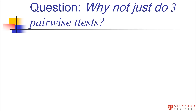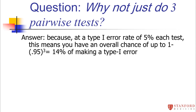You might ask: why wouldn't I just run multiple t-tests? I've got three groups — why not run a t-test comparing the placebo to the 800 milligram group, the 800 milligram to the 1500 milligram group, and the 1500 to the placebo? Why do an ANOVA at all? The reason is that when you run multiple tests, you increase your type one error rate. Instead of running one test, you'd be running three tests.